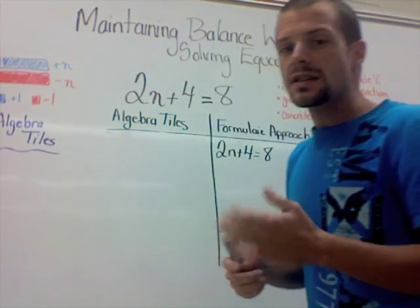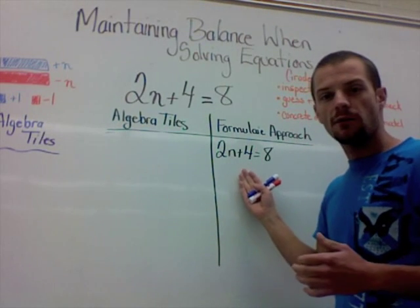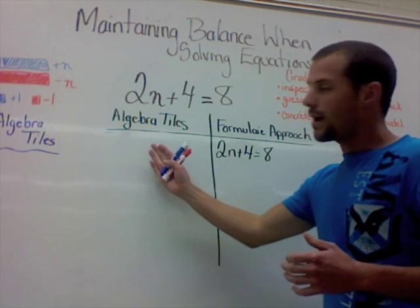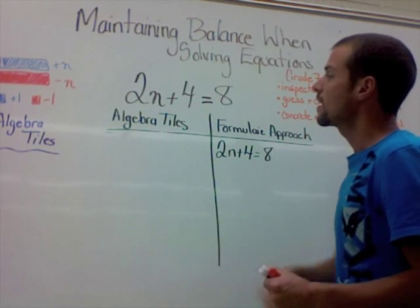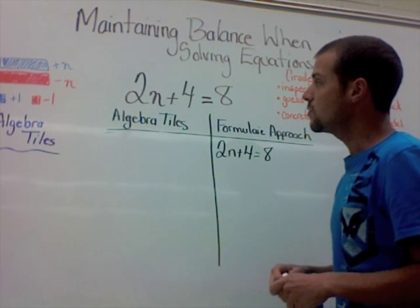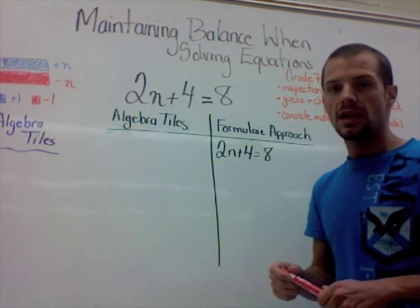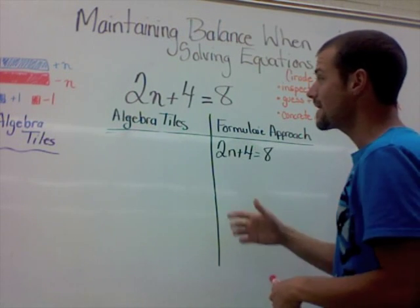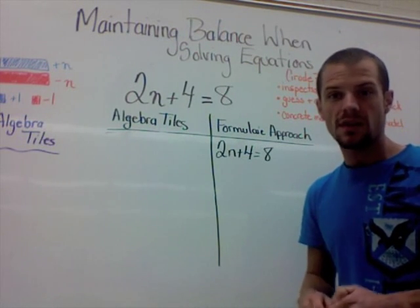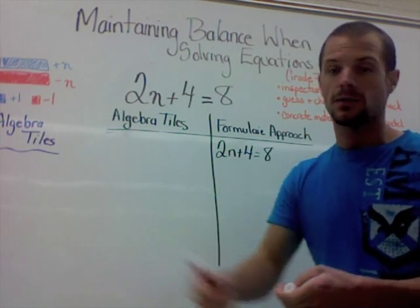Just like you would when you solve with a formula, you want to start by modeling the expression with algebra tiles. This expression, 2n plus 4 equals 8, if you read this on paper, might say 4 more than 2 times a number equals 8.